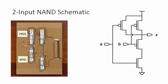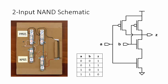This is the truth table. When inputs A and B are both zeros, or both ones, the NAND logic works just like an inverter.